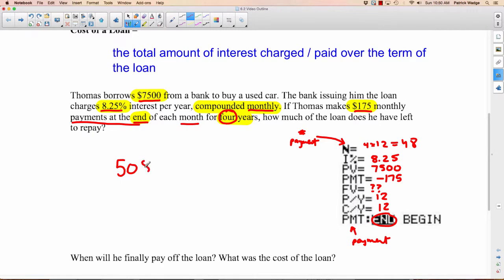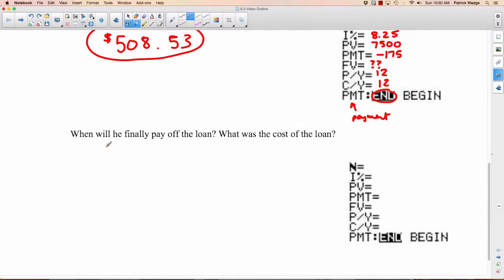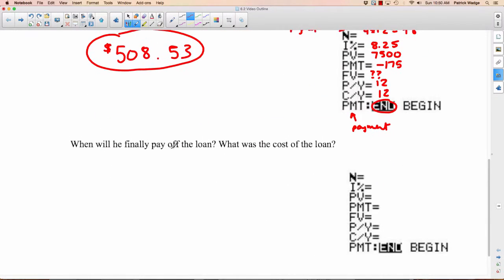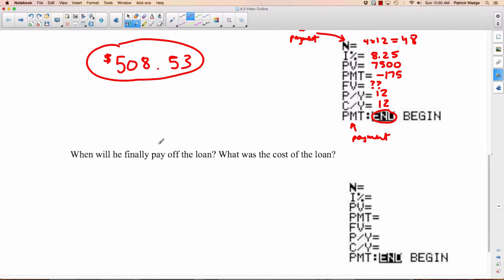So we'll go back here. $508.53 is our answer. The next question is, when will he finally pay off the loan and what was the cost of the loan? We want to know when he'll pay off the loan. So what changes here? In this case, we don't know what N is. We don't know how long it's going to take.